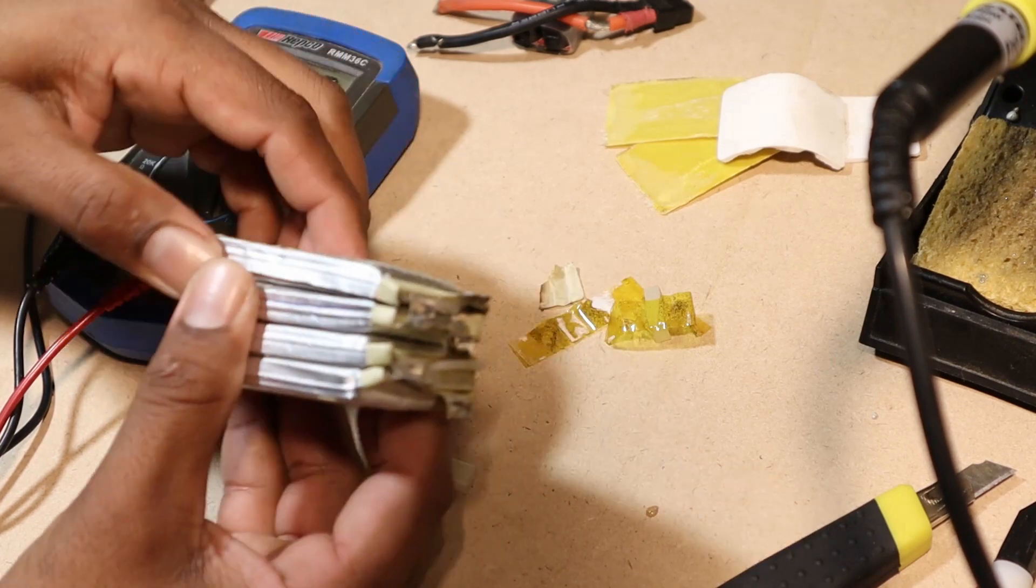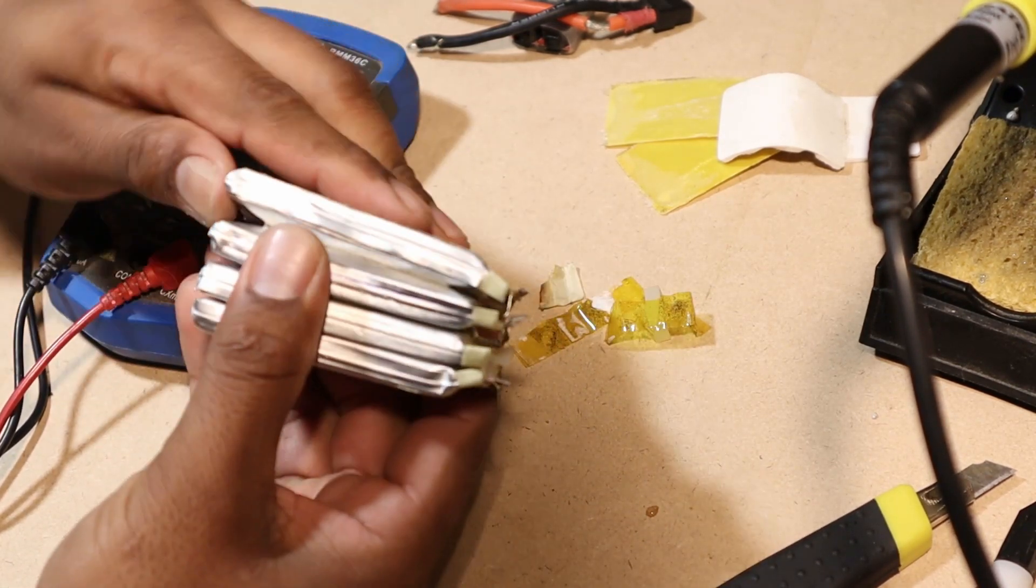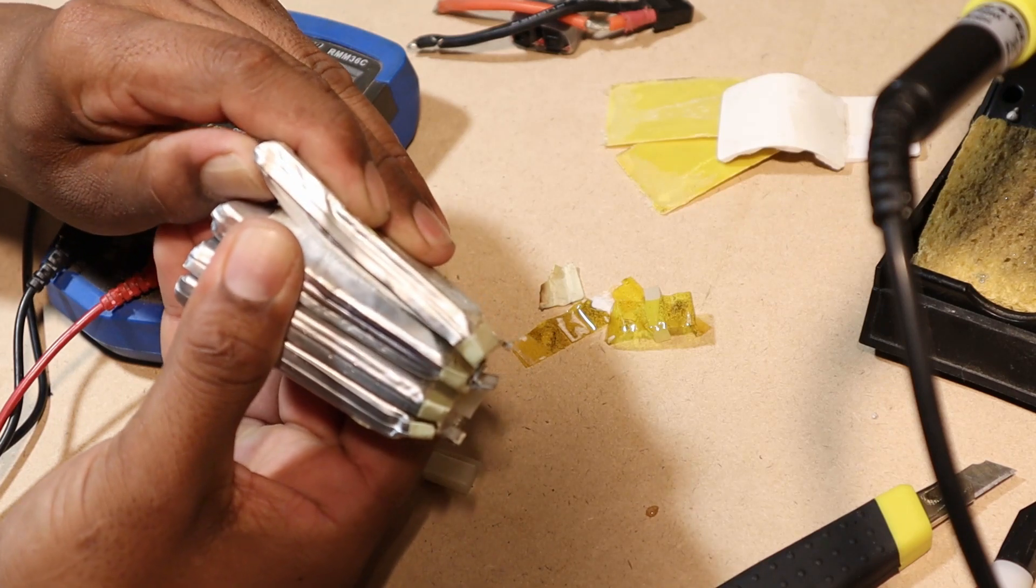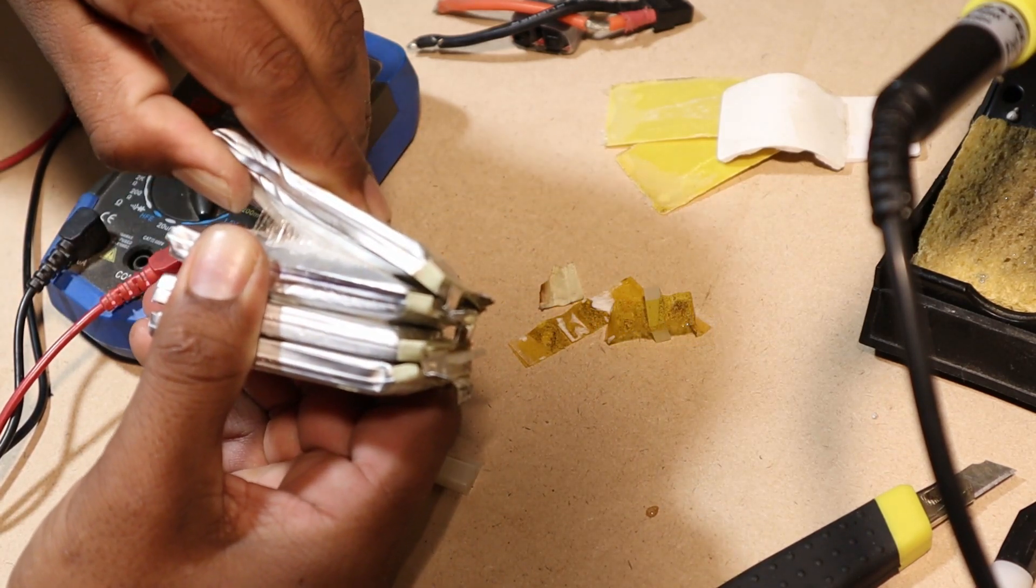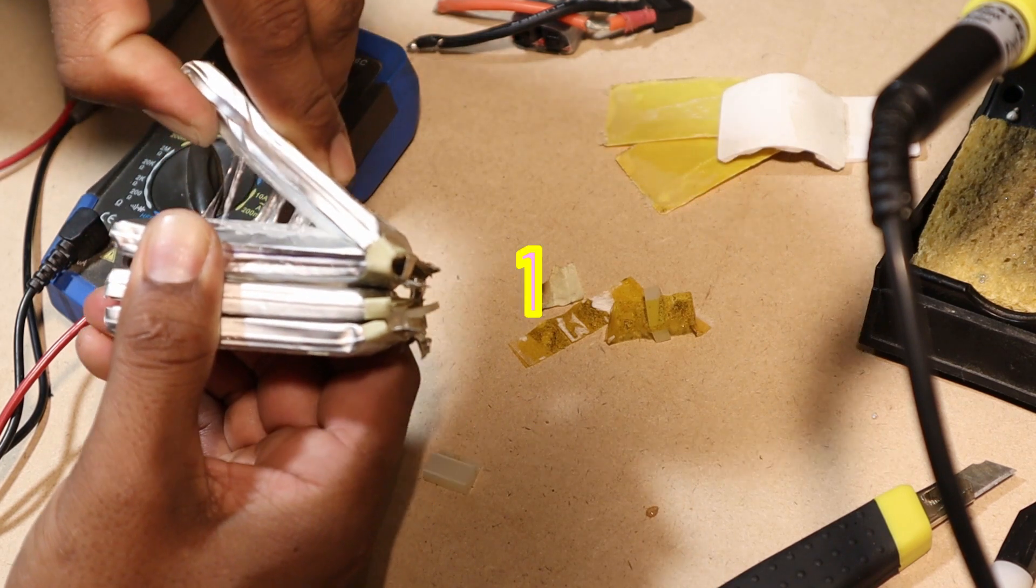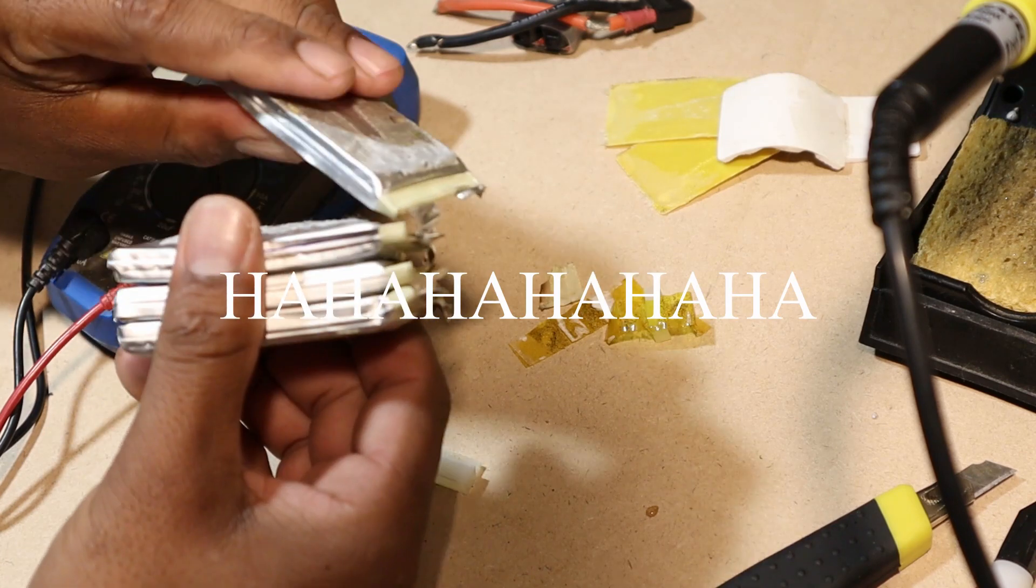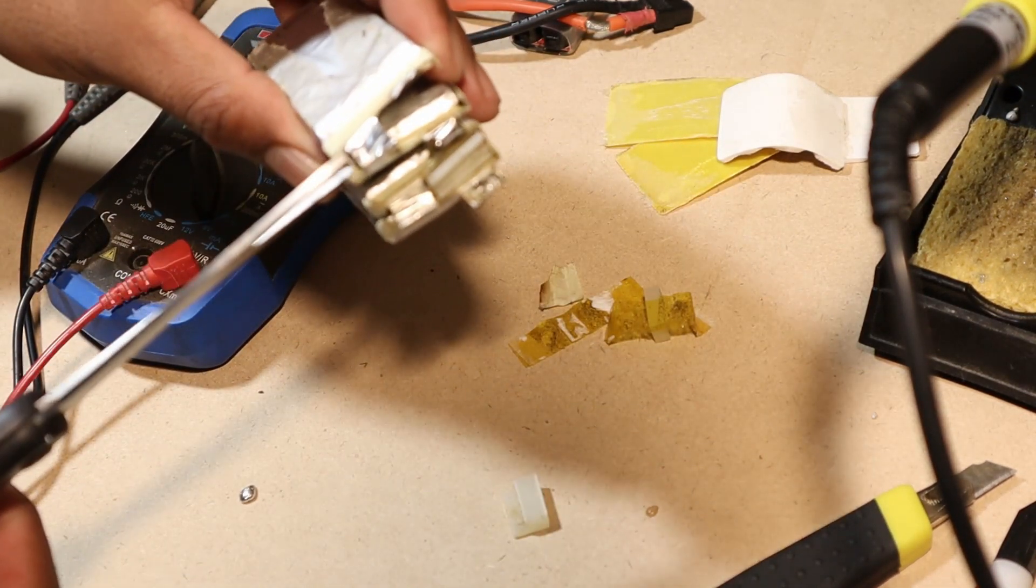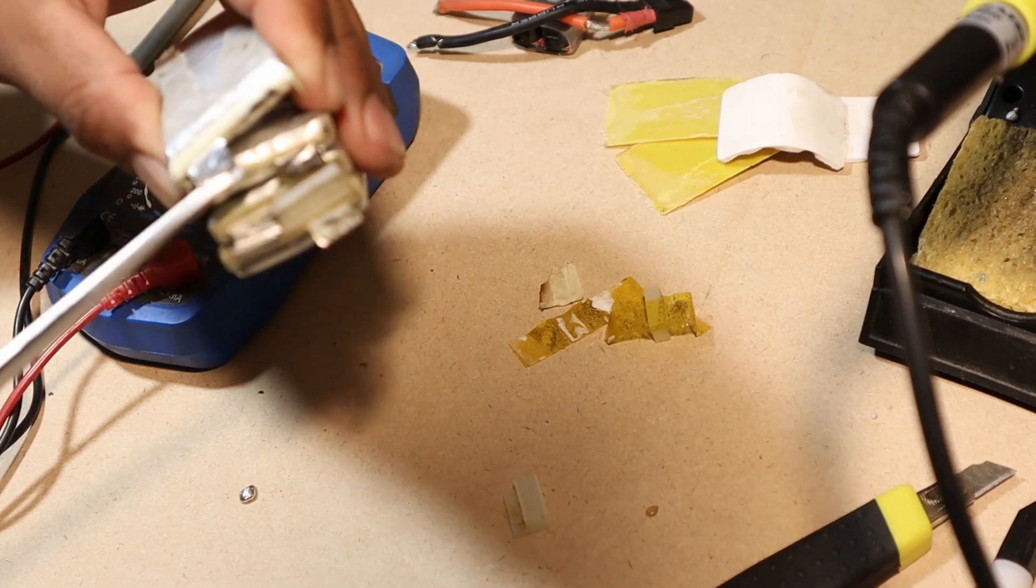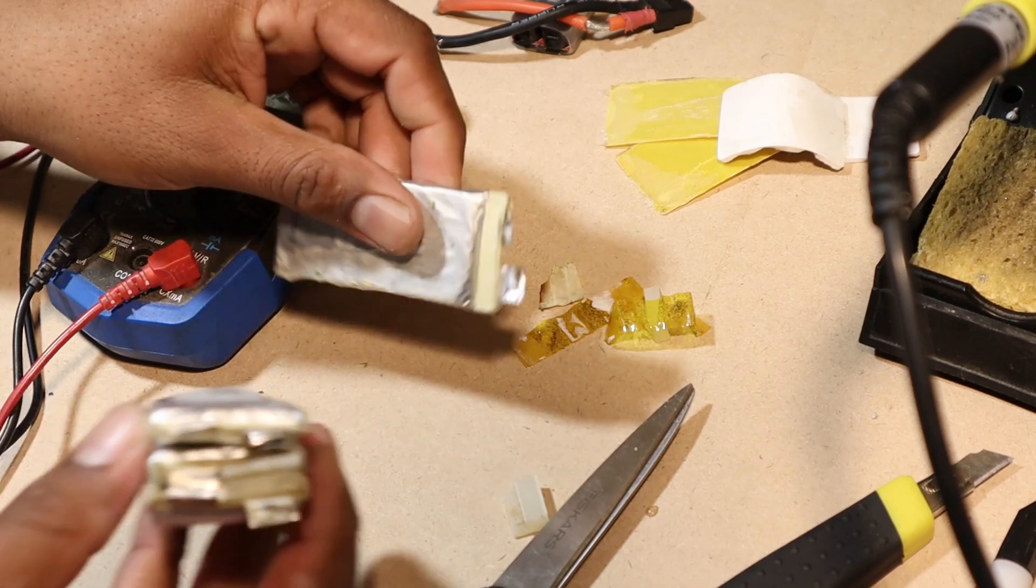Be really careful when you're doing this. You can't apply too much force, but yeah, eventually it will come off. Simply cut it with the scissors once you have two cells separated. It's easier to cut with the scissors than trying to separate them with the soldering iron.